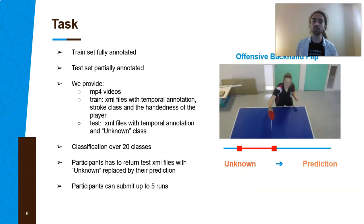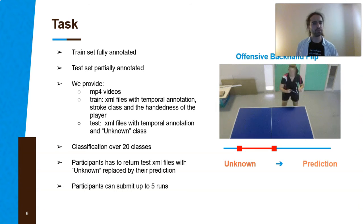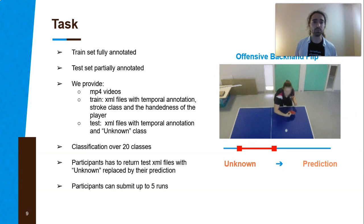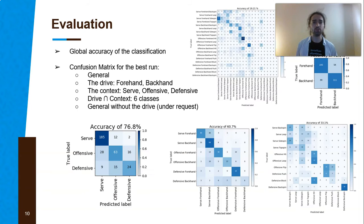The task is to classify trimmed video. We provide the video with the temporal segmentation and the classes of those segments. We also provide a test file where there are only temporal annotations, and the participant has to replace the unknown class in the test file with their prediction. Participants may submit up to five runs. The evaluation is done using the accuracy metric, and we observe especially the global accuracy, meaning the accuracy over all the strokes.